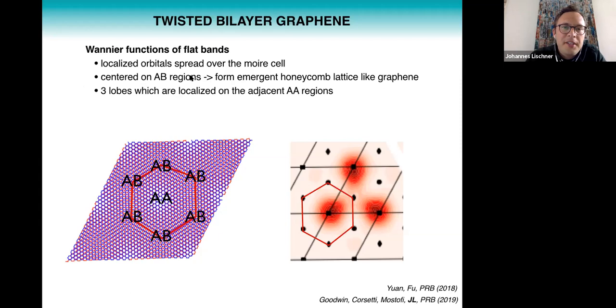Now the interesting properties of these Wannier functions is that they're localized on the AB regions. And you see that these AB regions form an emergent honeycomb lattice much like the atomic lattice of graphene, and this explains why their electronic structure is so similar.